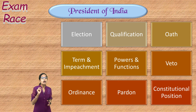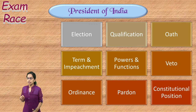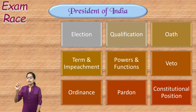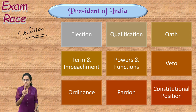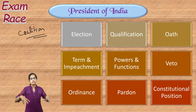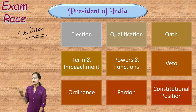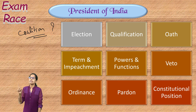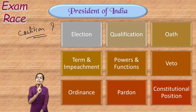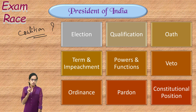The president appoints the prime minister in India — by law, the leader of the majority party. In case no single party has a majority and a coalition government is formed, the president has the discretionary power to select a suitable leader. That is one key instance where the president exercises discretionary power.